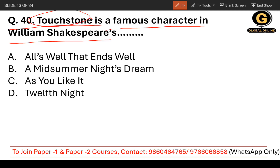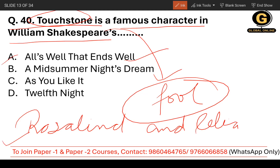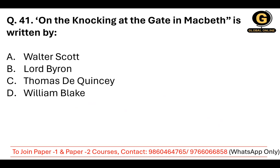Question number 40: Touchstone is a famous character in William Shakespeare's — Touchstone is a very famous, clever and witty fool. The character was with Rosalind and Celia. The options are All's Well That Ends Well, A Midsummer Night's Dream, As You Like It, and Twelfth Night. The correct option is As You Like It, the third one.